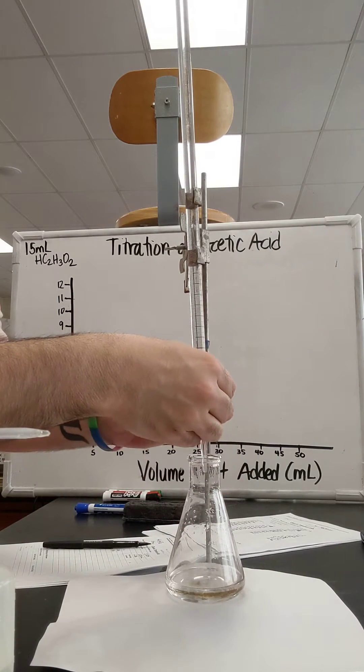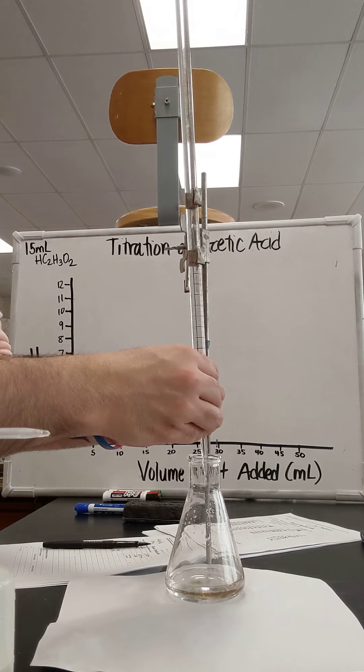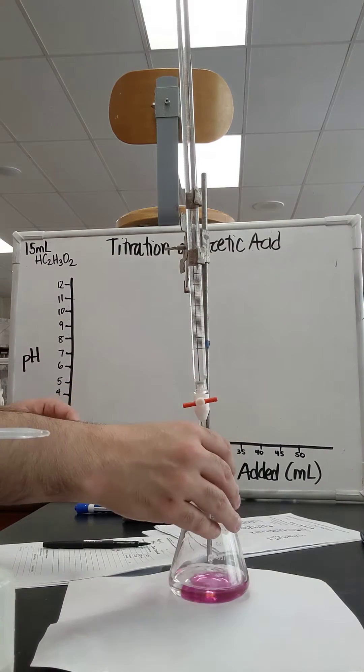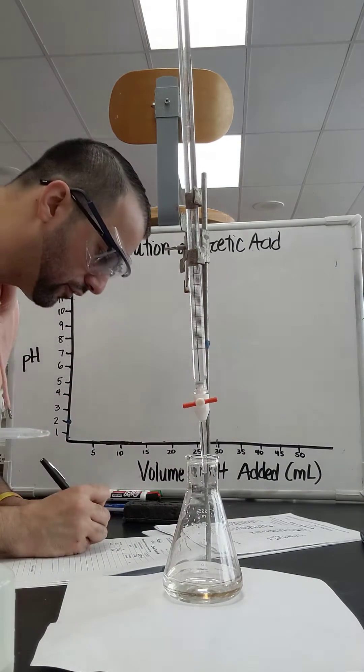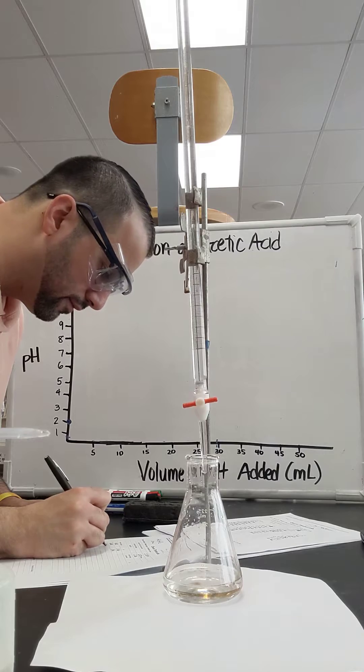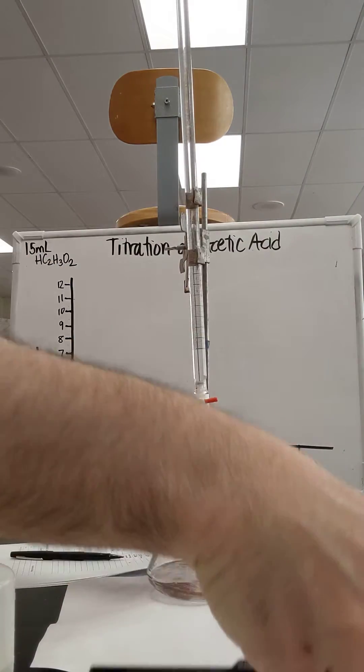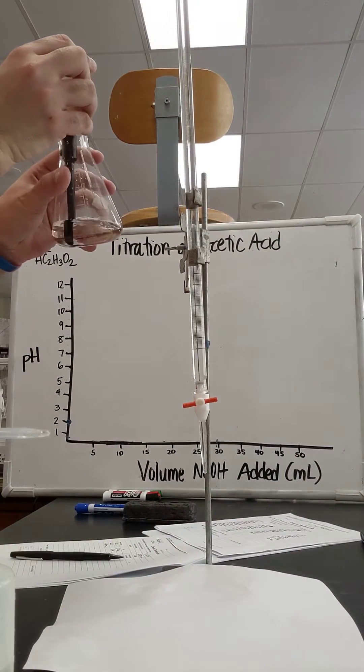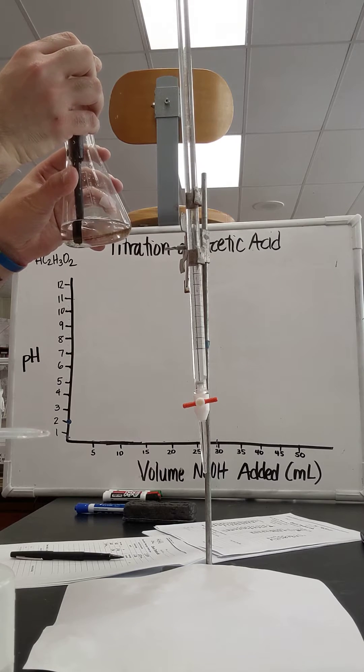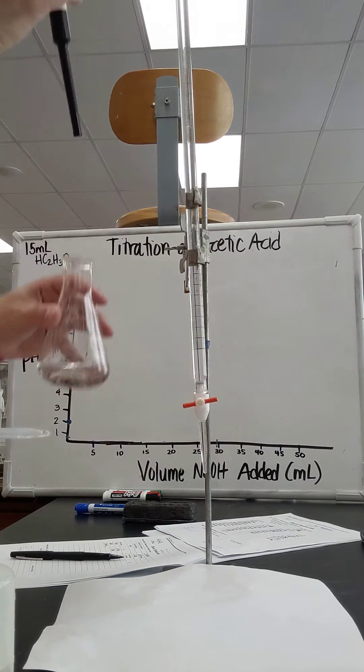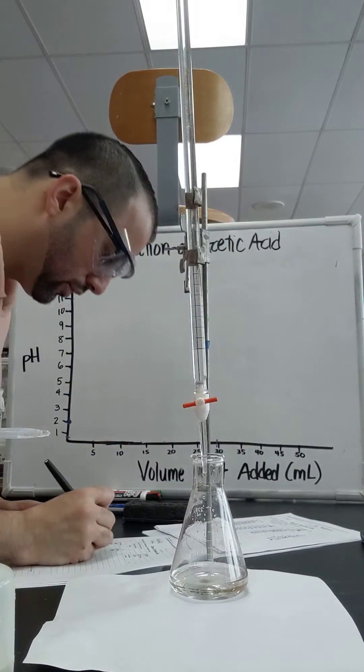Since it jumps so much, I'm going to do another 0.5 milliliters. So I got another 0.5 milliliters in there, that's 2.5 milliliters. And if I quickly record the pH, pH is about 4.13.